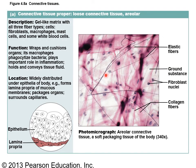Areolar connective tissue falls under loose connective tissue proper. It contains all three fiber types — collagen, elastic, and reticular — with a lot of open ground substance. I call it the universal packing material because it is found everywhere: between muscle fiber groups, making up fascia, and widely distributed under epithelia of the body. It can take on fluid and is a very thin tissue.